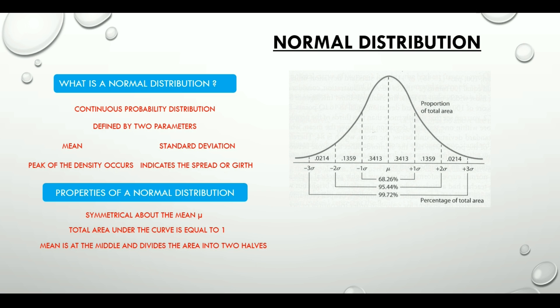It is completely determined by its mean and standard deviation or variance. And the most important thing we should know about the normal distribution is that the mean, median and mode are equal.